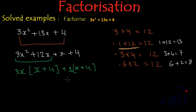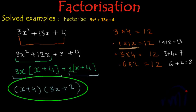And now we have got two terms. First one is 3x multiplied by x plus 4, and second is 1 multiplied by x plus 4. From these two terms again we can take x plus 4 common, and inside the bracket we will be left with 3x plus 1. So these two are the factors of 3x square plus 13x plus 4.